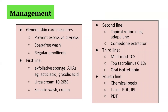Third-line options include mild to moderate topical corticosteroids, topical tacrolimus, or oral isotretinoin. Fourth-line options include chemical peels, lasers such as pulsed dye laser or intense pulsed light to target the redness, as well as photodynamic therapy.